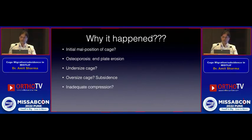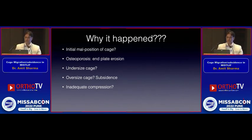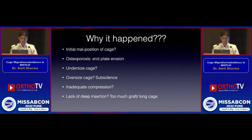MIS TLIF poses a unique problem: most systems don't have a good compression mechanism. In open surgery, you use a compressor after placing the cage and compress across the screw — but this is not well done most of the time in MIS TLIF. That's one of the main reasons for cage back-out. Also, if you're not able to insert the cage deep enough, that's another issue.